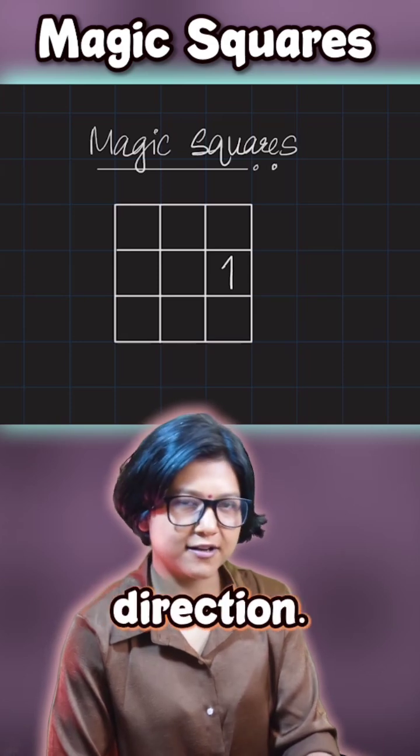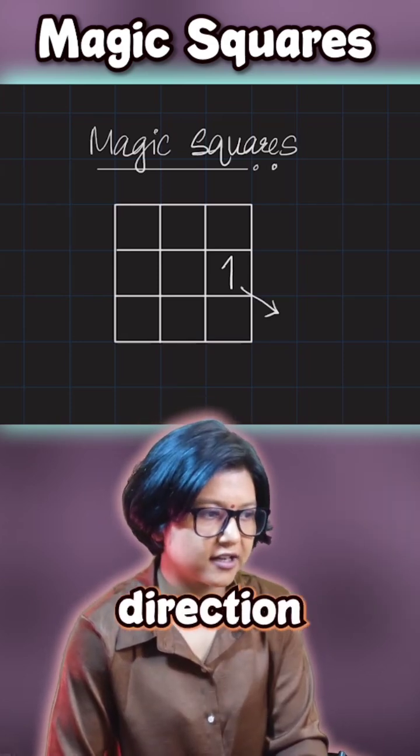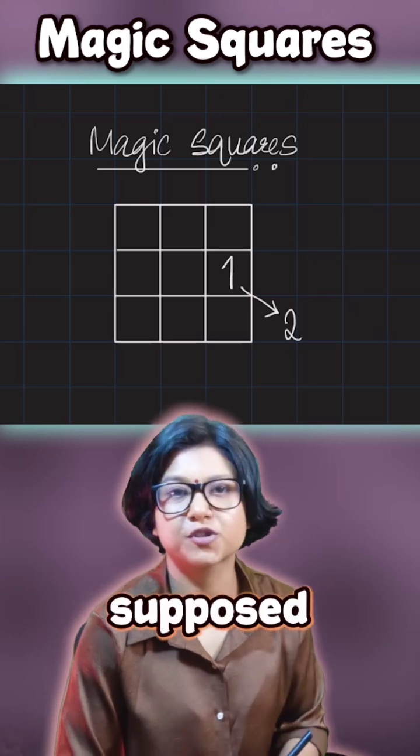You start at one point. I want to go in one direction, so I'm following this diagonally down right. If I want to follow this direction, then I am supposed to write 2 here.